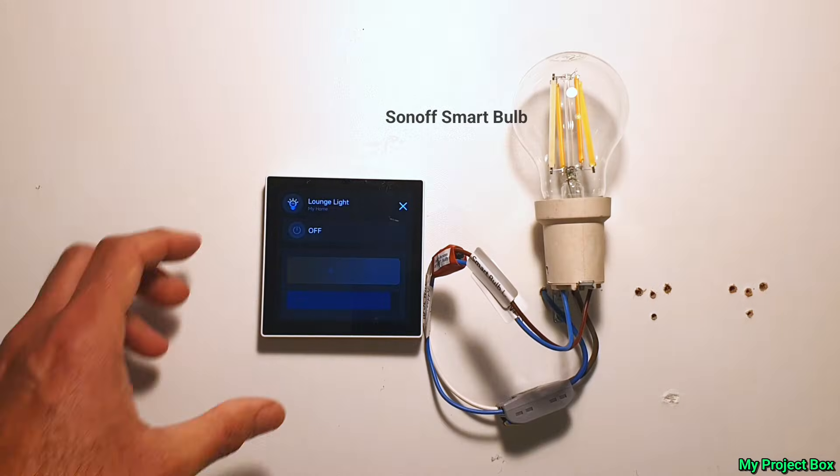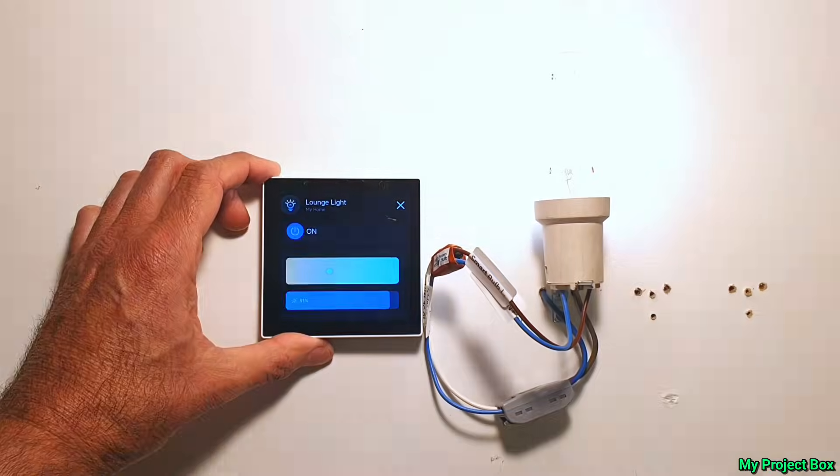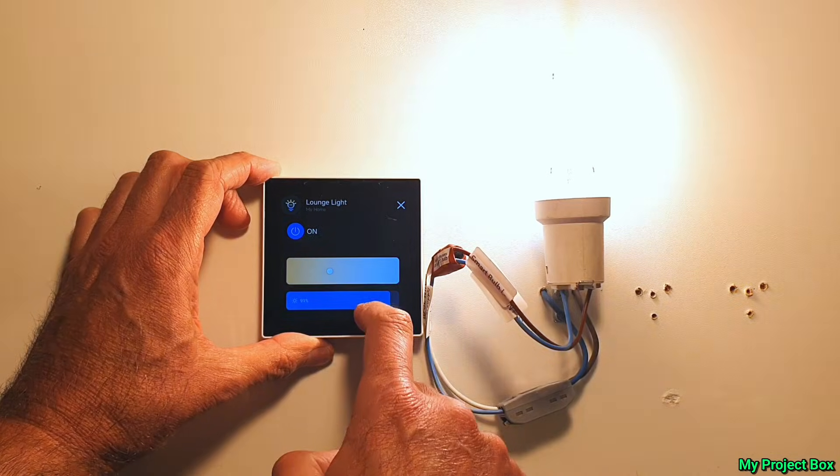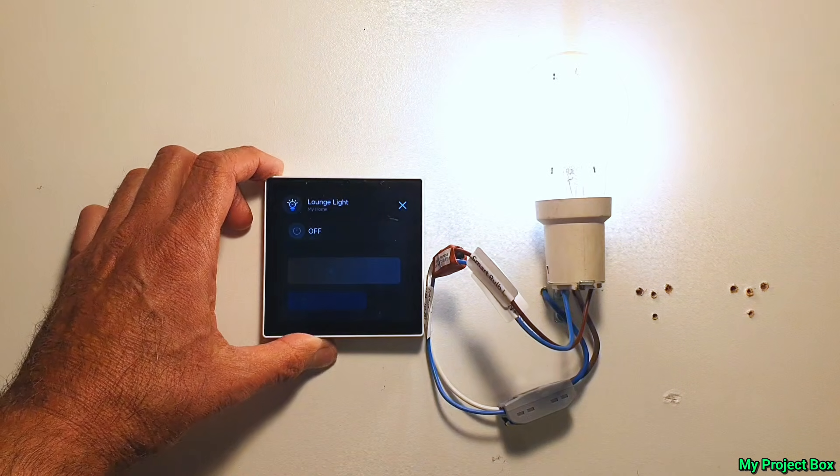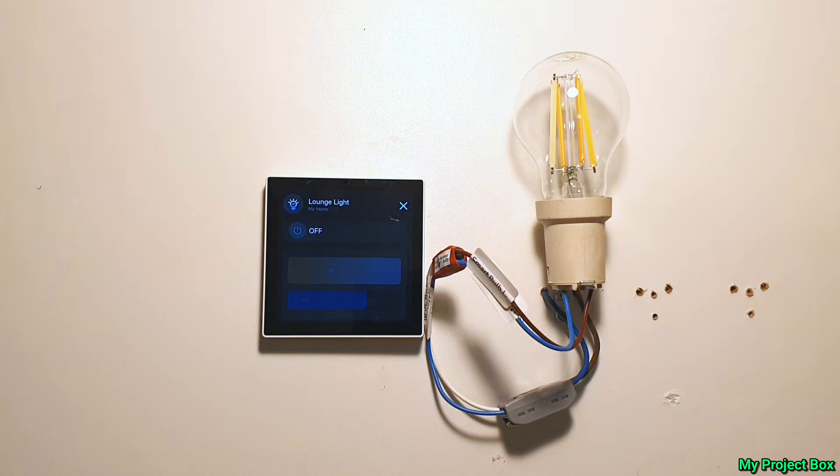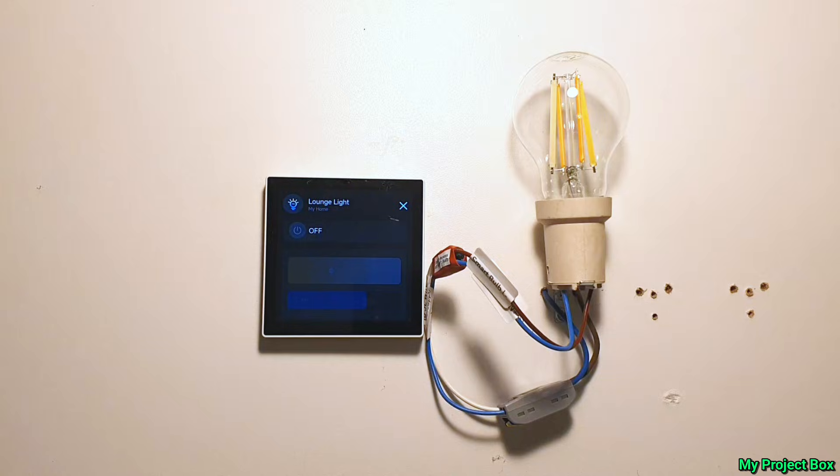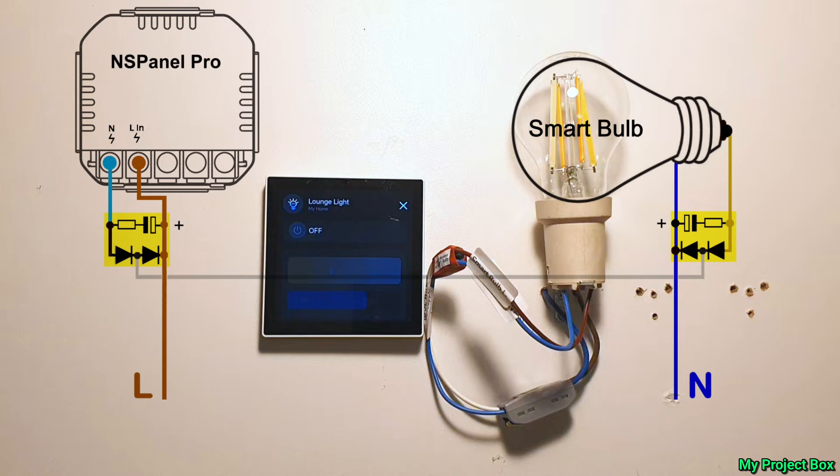So with the power back on we have full control over our smart bulb. We can now adjust the brightness and turn it on and off and all the usual fun things. Well there you go ladies and gentlemen, definitive proof that you don't need a neutral connection behind the light switch to power the NS panel pro using my no neutral circuit.